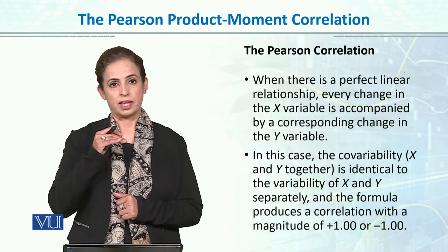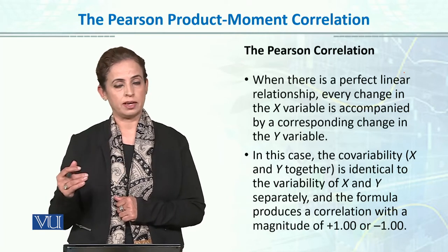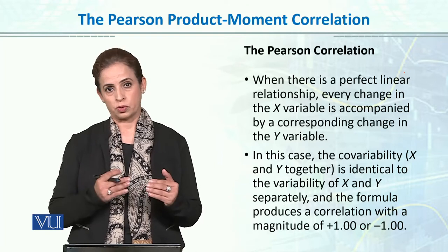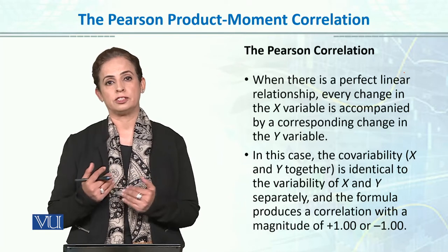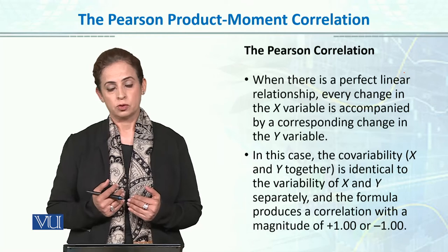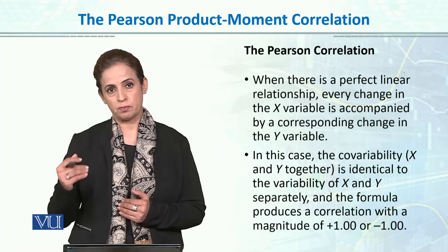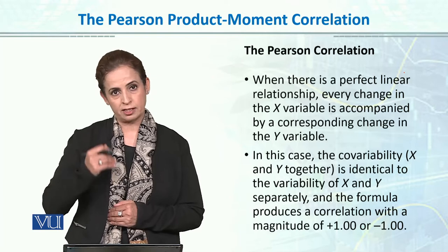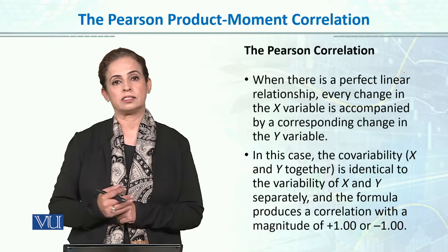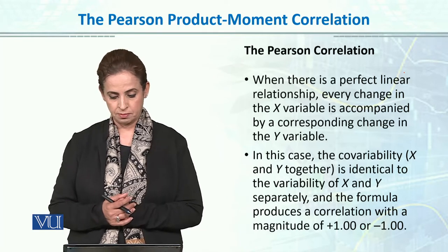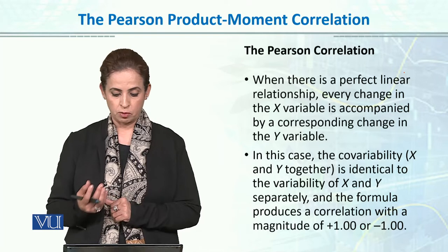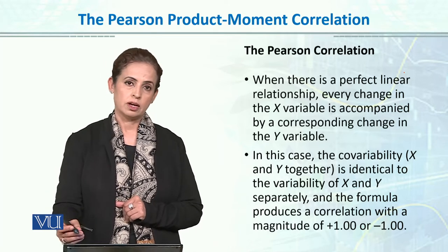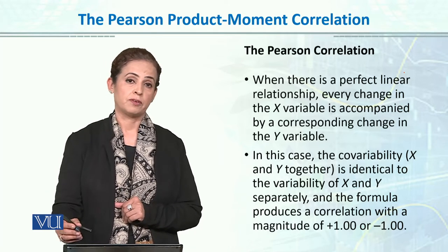So if x is 1 then y is 5, x is 2 then y is 10 — in this case it is a perfect linear relationship. So not only co-variability, but we see that x and y also have consistency with that variability. So when we apply the formula and the product, our correlation is a perfect correlation.